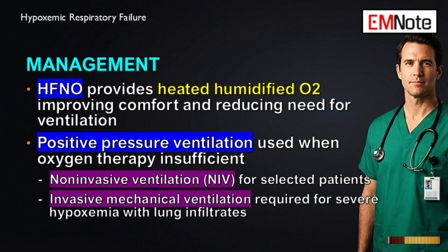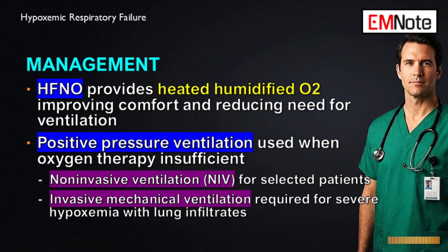When do we escalate to positive pressure ventilation? You escalate when you can't keep saturation above 90%, or if the work of breathing is just too high. The first step is usually non-invasive ventilation, or NIV, which uses positive pressure to help recruit more alveoli and takes a huge load off the patient's respiratory muscles — it can prevent fatigue. But when NIV isn't enough, invasive mechanical ventilation becomes necessary for severe, life-threatening hypoxemia — think diffuse lung infiltrates from ARDS, inability to protect the airway, excessive secretions, or exhaustion requiring full support.